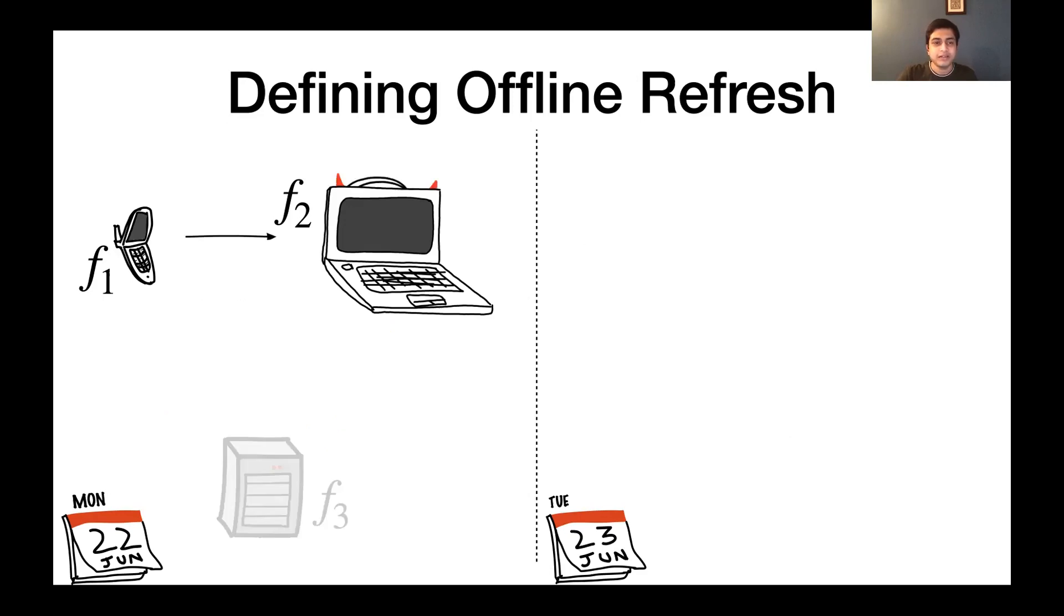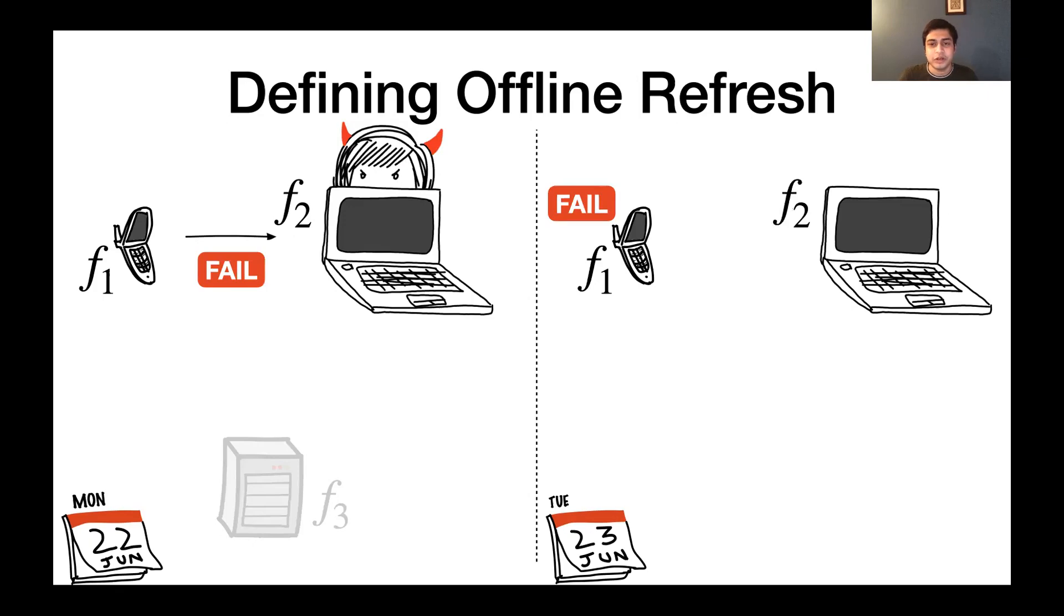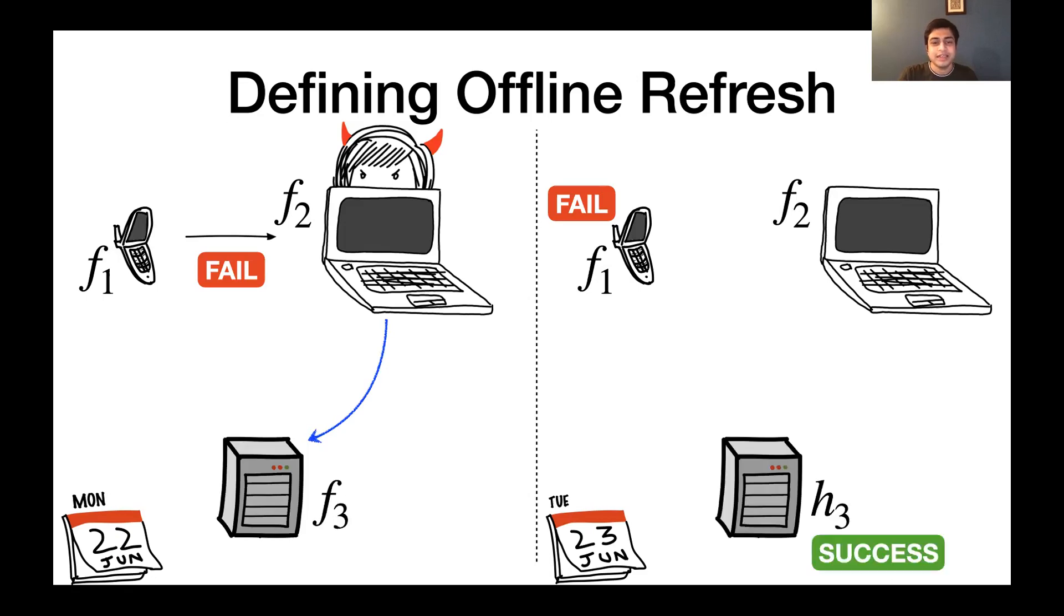So the tricky part is defining how failures happen. Let's say that among the two online parties, one of them is corrupt and decides to fail the protocol, the refresh procedure on Monday. And so on Tuesday, both online parties still have shares of f. But it could be possible for this attacker to send some sort of package to the offline device, the server in this case, that induces it to, when it wakes up, delete its share of f and move to some polynomial h, to some value h_3.